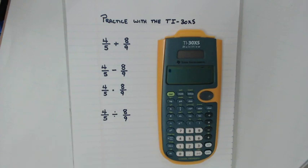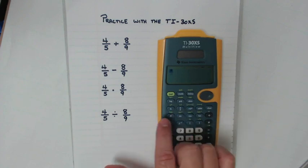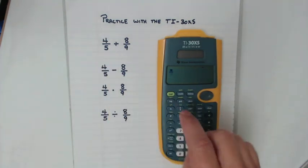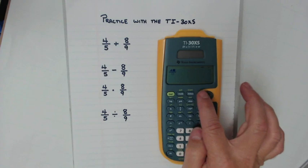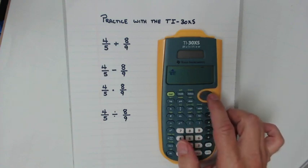So we're going to go over each one of these. Remember our fraction button is right here. I'm going to press that, and then I'm going to put this first fraction in here. Four, use the keypad to move it down. Fifth, use the keypad to move it over.